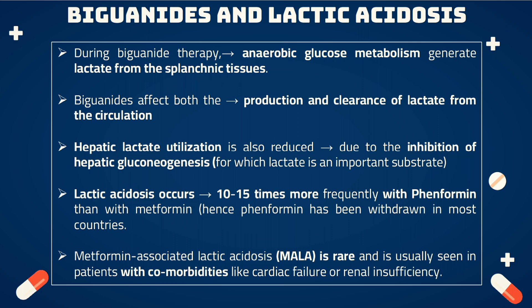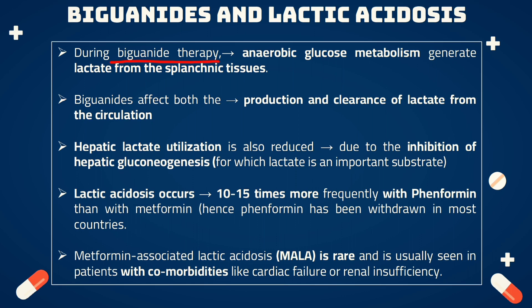Let's see how biguanides cause lactic acidosis. During biguanide therapy, anaerobic glucose metabolism generates lactate from the splanchnic tissues. The splanchnic tissues include the stomach, small intestine, large intestine, pancreas, spleen, liver, and kidneys. Biguanide therapy affects both the production of lactate and the clearance of lactate from the circulation, leading to an increase in the concentration of lactate in the body.